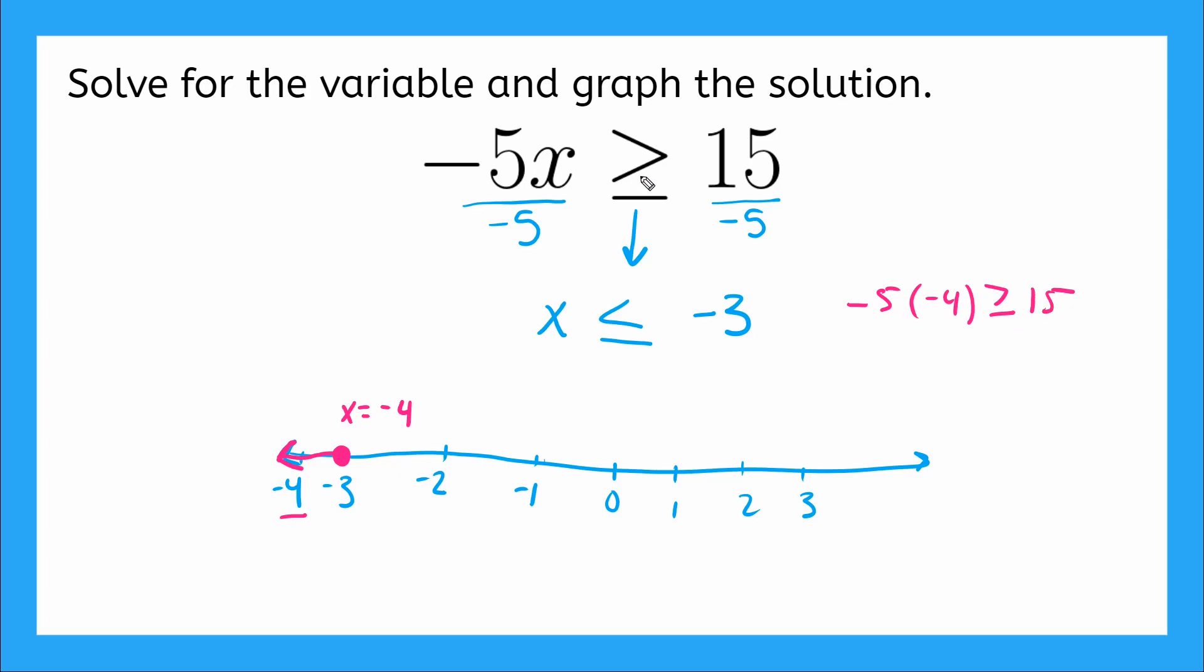So remember, I'm using my original inequality, so I use my greater than or equal to. I'm going to have negative 5 times negative 4. That gives me positive 20 greater than or equal to 15. Is that true? It sure is. Look at that. We did it right.